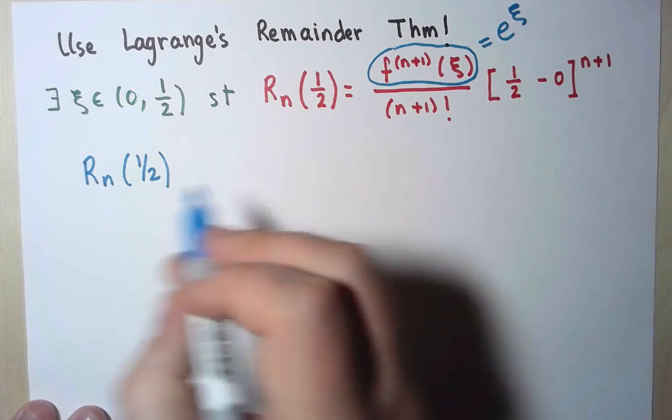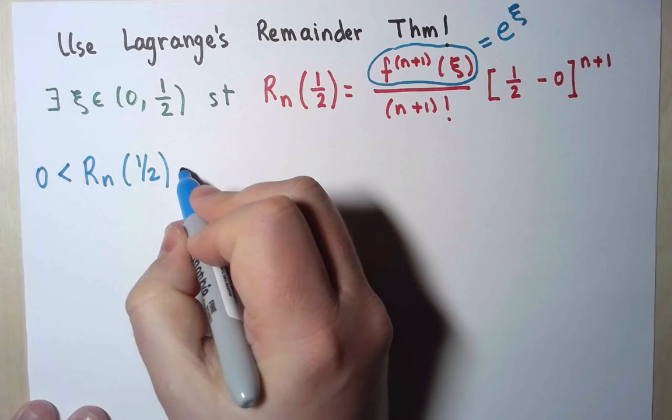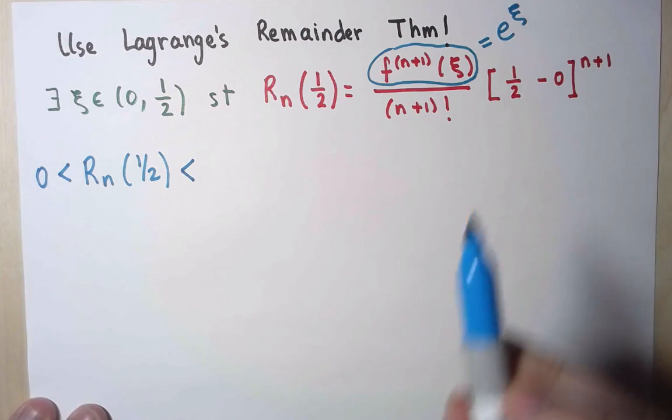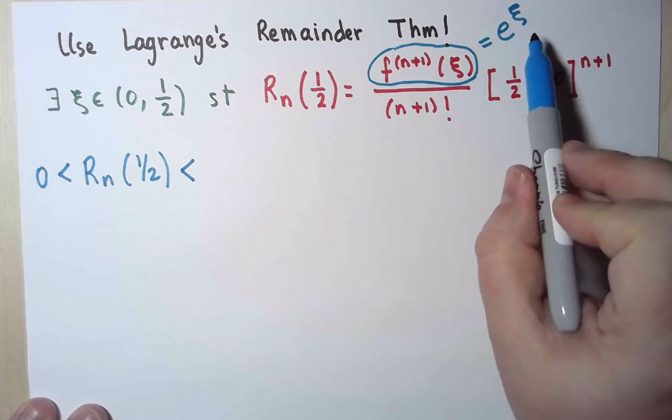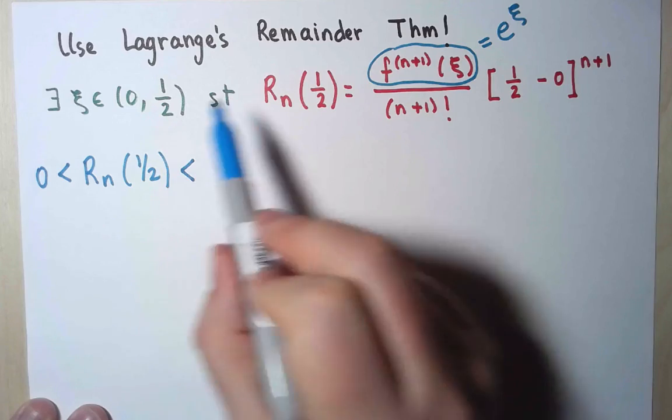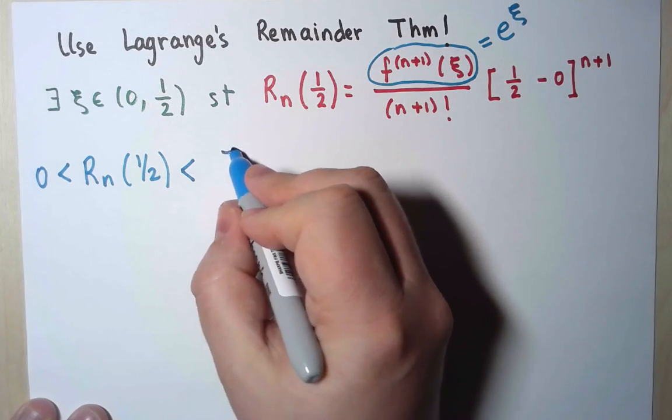Given that I have this form, I know the remainder will necessarily be positive. And now, as for the other end, well, I don't know what xi is, but it's between 0 and 1/2. So e to the xi is at most e to the 1/2.